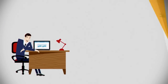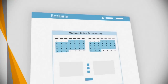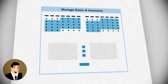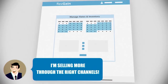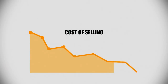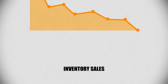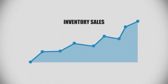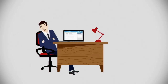ResGain's smart and innovative rule-based common pool inventory management lets you easily enable your chosen channels to sell more inventory, reducing your cost of selling and keeping everything simple and straightforward. And when you're ready for distribution beyond OTAs, we've got you covered.